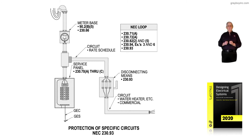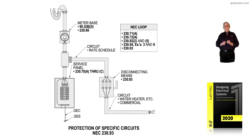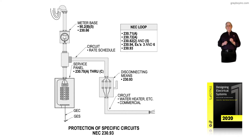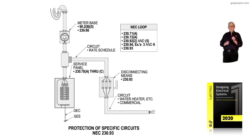The service equipment has to comply with 230.70A through C, but the tap ahead of the main has to comply with 230.82. Notice we're tapping ahead of that main, supplying over to that disconnecting means, and once we get to the tapped area where those conductors are feeding the switch, we have to have overload protection of those conductors. We're feeding a water heater in a commercial building, and the tap is complying with 230.82, items 2 and 5.